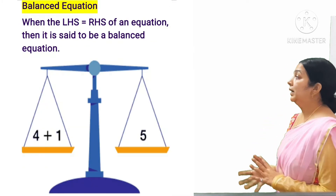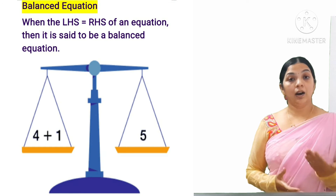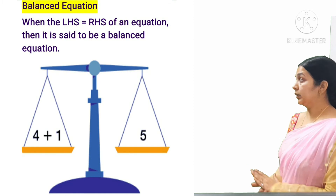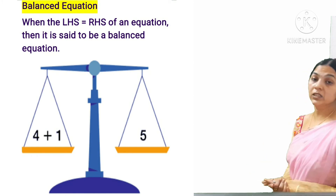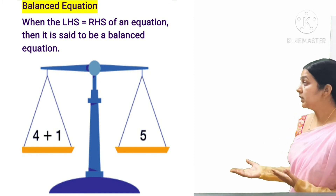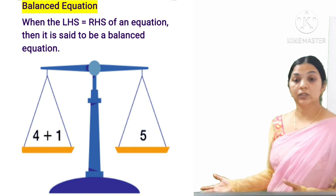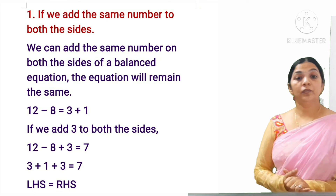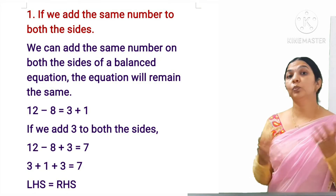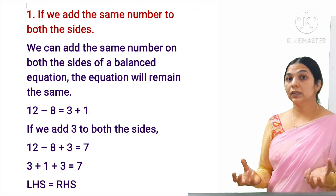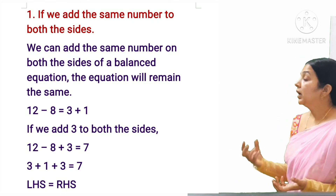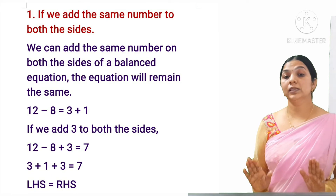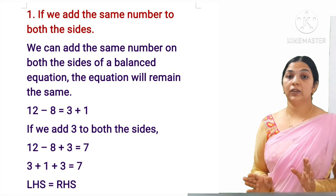Now, what is a balanced equation? When RHS and LHS of an equation are equal, it is said to be a balanced equation, as shown in this diagram. If we add the same number to both sides, the equation remains the same — it doesn't change its value.